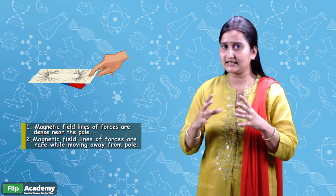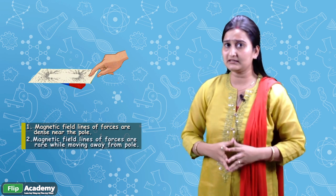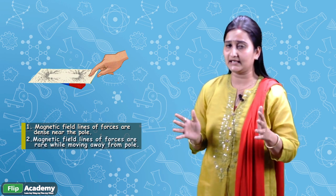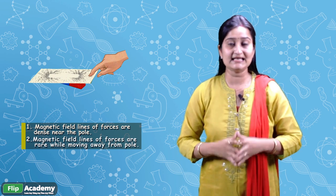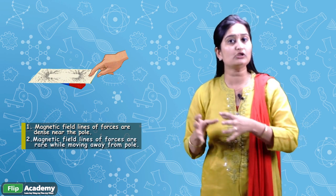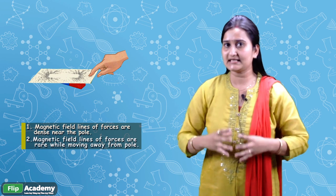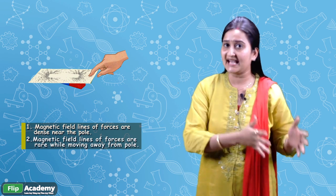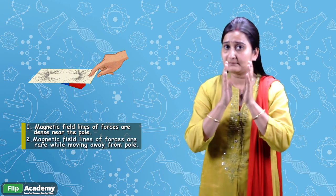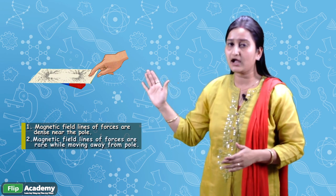So at those ends, the force of attraction or repulsion will be felt the most. Apart from that, if you look at the magnetic lines of forces away from the two ends — north and south — in the middle area, the lines appear more rare, meaning spread far apart. This is because the strength of the magnet is very low there. If you bring any iron object close in that region, you won't feel as much attraction or repulsion as you would at the north or south ends. This can be easily shown by the magnetic lines of forces drawn in the diagram.